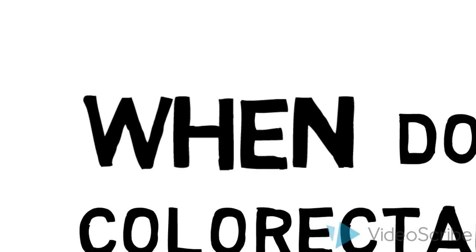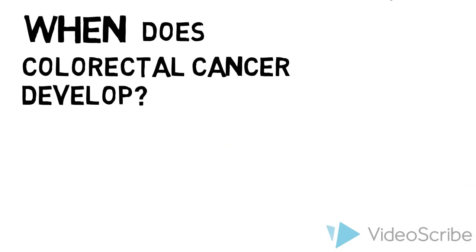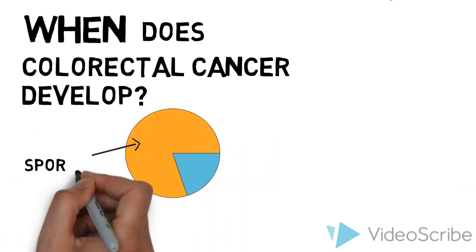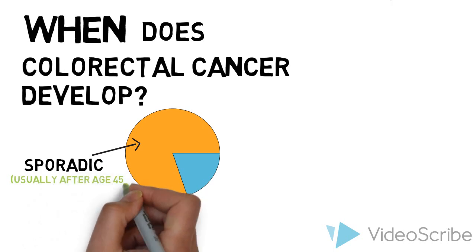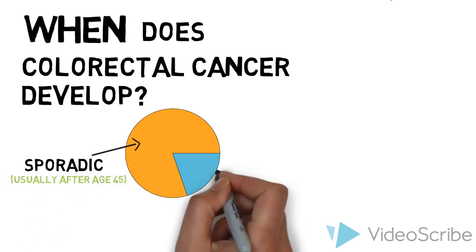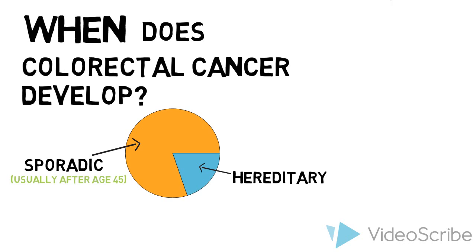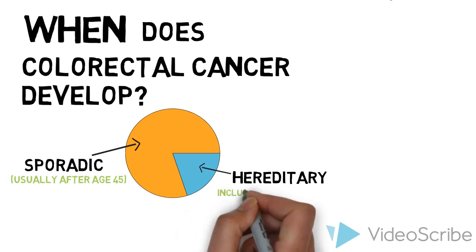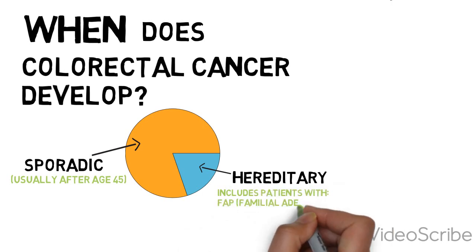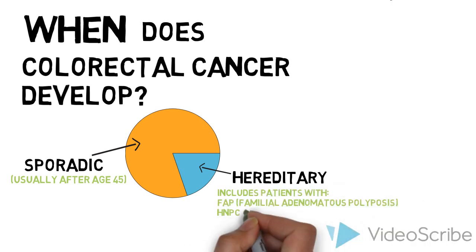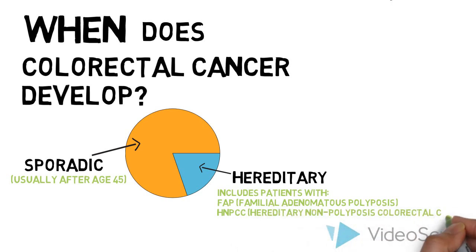When does colorectal cancer develop? Most cases are sporadic and occur after the age of 45. However, 15 to 30 percent of colorectal cancer patients have a major hereditary component. These include patients with familial adenomatous polyposis (FAP) and hereditary non-polyposis colorectal cancer (HNPCC), also known as Lynch syndrome. These patients can develop colorectal cancer much earlier in life.